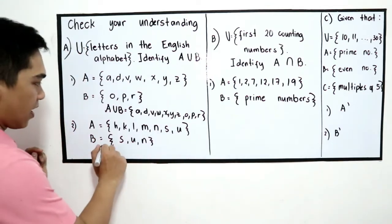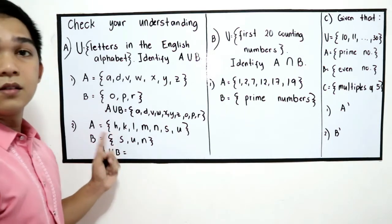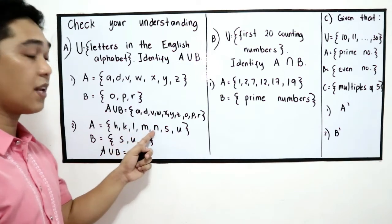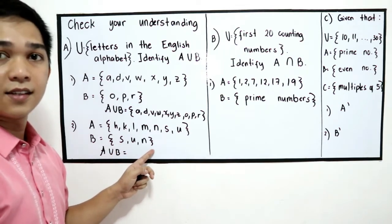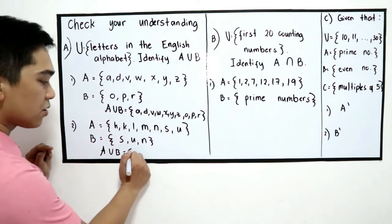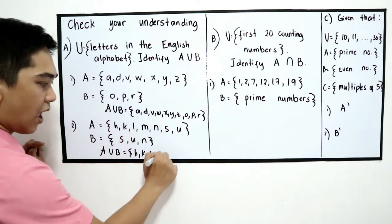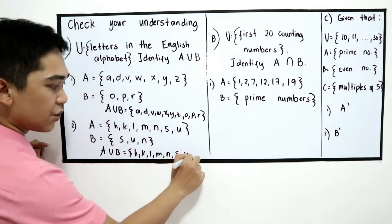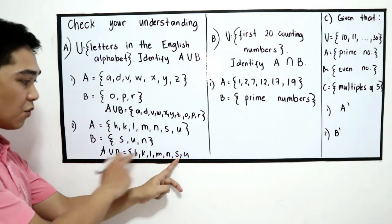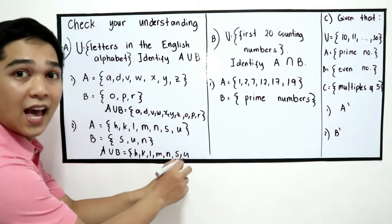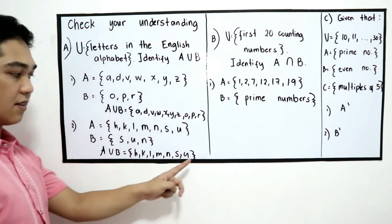For number 2, A union B: set A = {H, K, L, M, N, S, U} and set B = {S, U, N}. Combining them, we get H, K, L, M, N, S, U. Since S, U, and N are already in set A, there is no need to repeat them. So A union B = {H, K, L, M, N, S, U}.